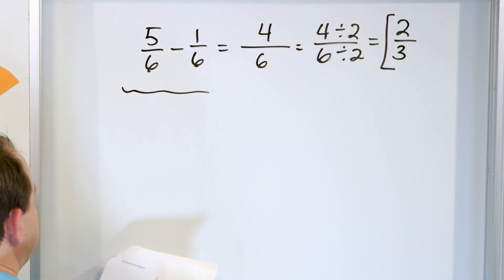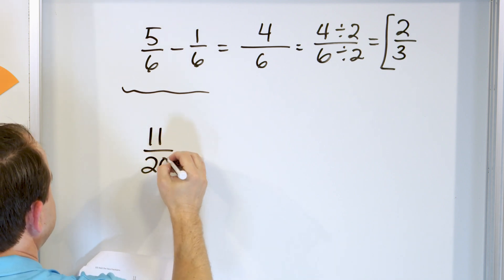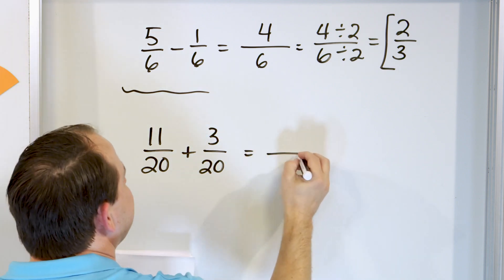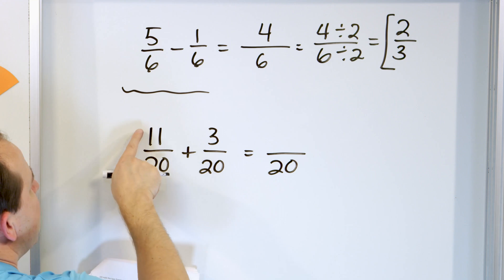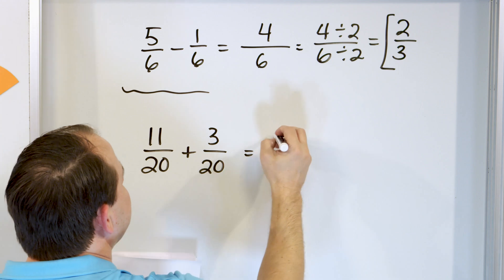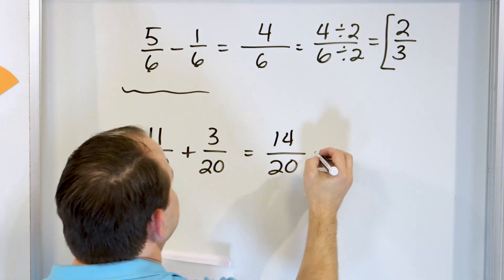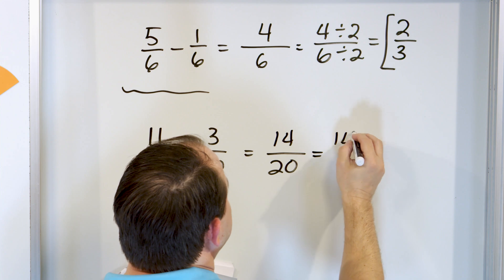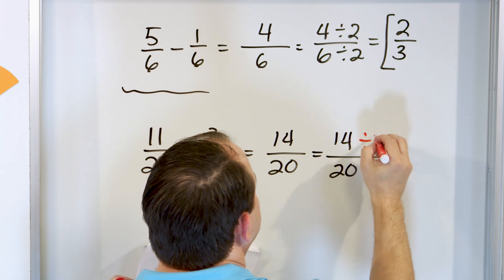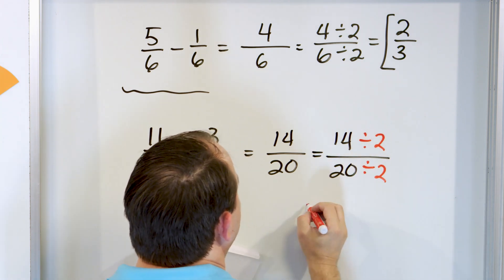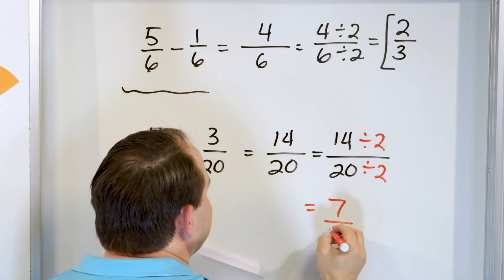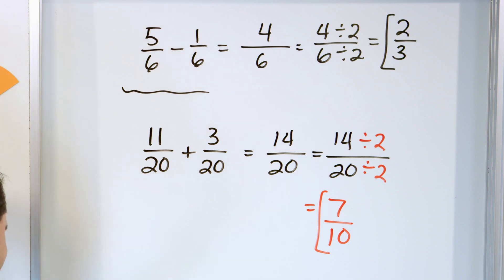We only have one final problem. Let's take a look at eleven-twentieths, and we'll add to that three-twentieths. Denominators are already the same — twenty goes into our answer. Eleven plus three is fourteen, so this is the answer: fourteen-twentieths. Can I simplify? Yes, you can divide top and bottom by two — those are both even numbers. Fourteen divided by two is seven, and twenty divided by two is ten. So the answer here is seven-tenths.